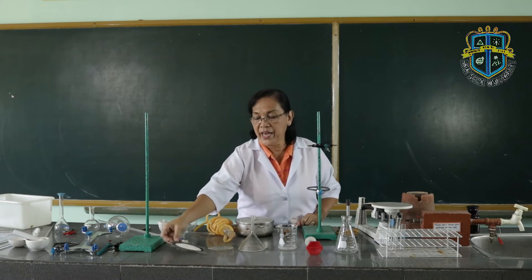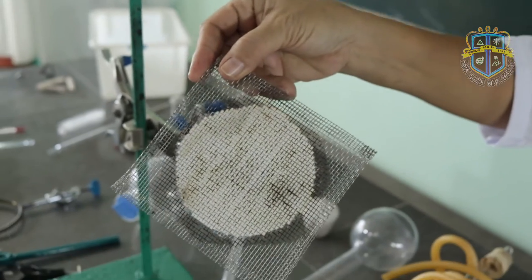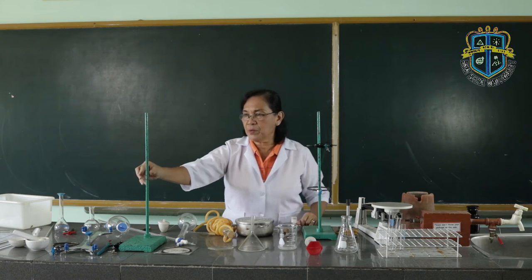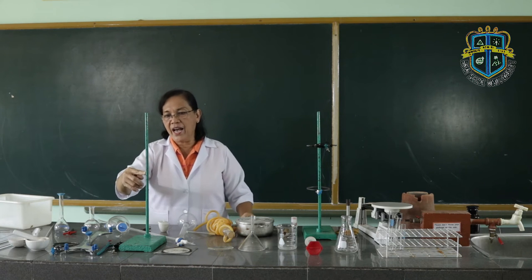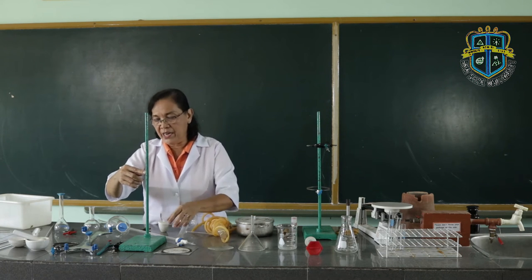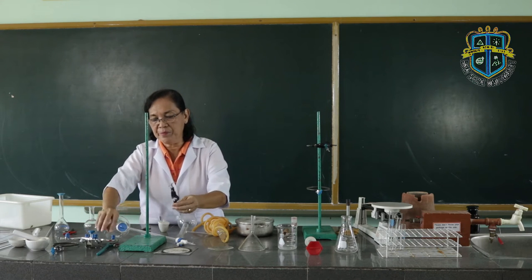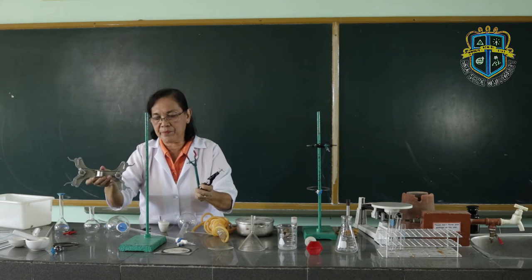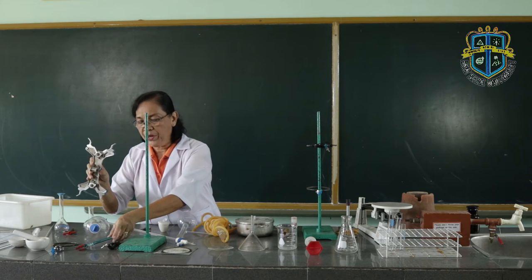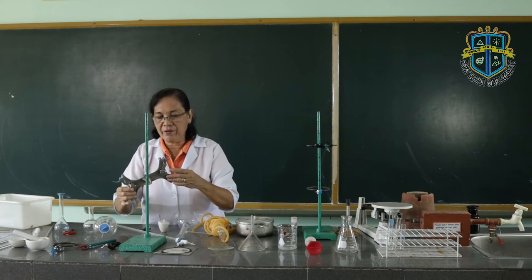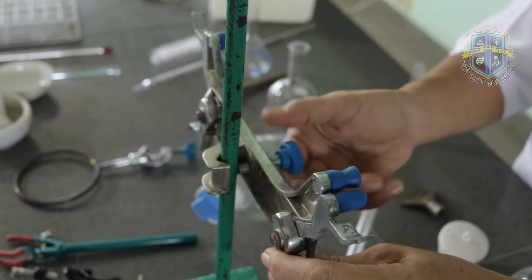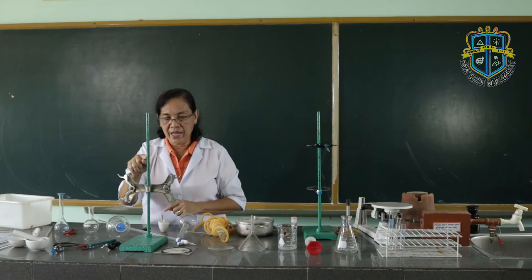Then we have the wire gauze. The wire gauze is used to support vessels or containers when heating. Then we have the iron stand. The iron stand supports the iron clamps. We also have the iron clamps and the burette clamp. You have to fasten the clamp tightly onto the iron stand.